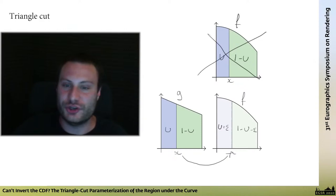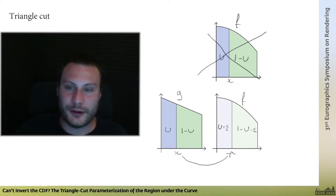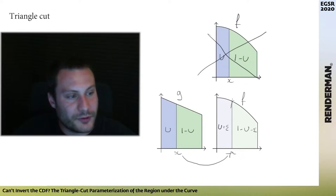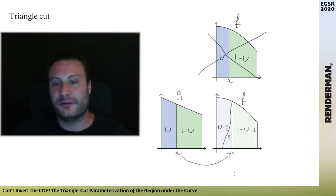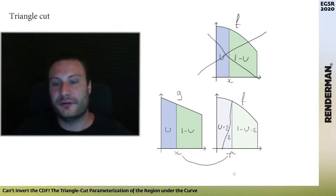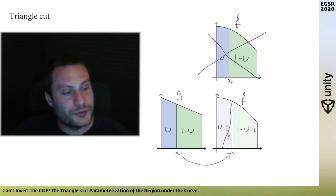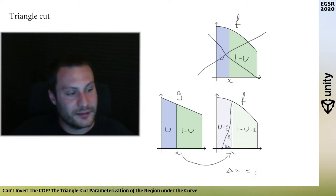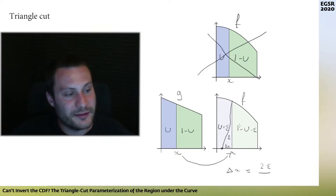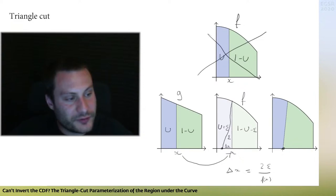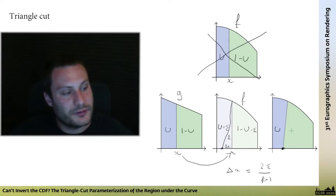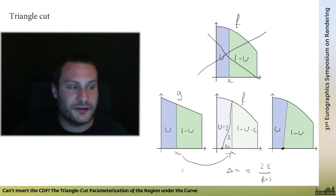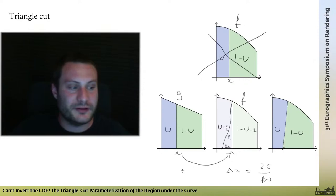Now that we have a geometric intuition for the error, we can find a geometric way to fix the bias: cut out a region with exactly the same area as the error. The most simple way to do this is to cut a triangle whose area is exactly epsilon. To find the triangle, we need the width delta-X: delta-X equals 2 times the area divided by the height F(X). By computing this, we obtain the correct location such that the split is exactly U and 1 minus U.